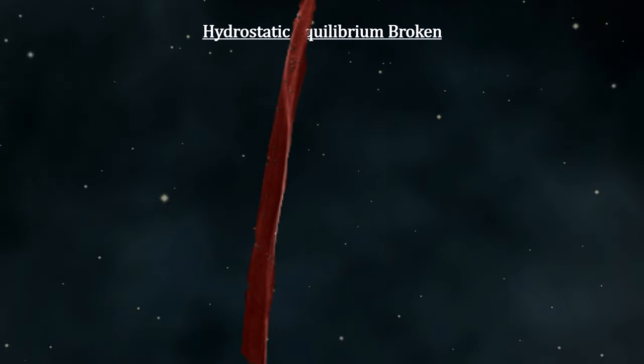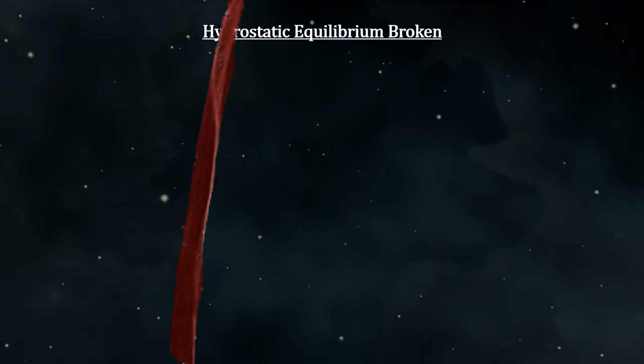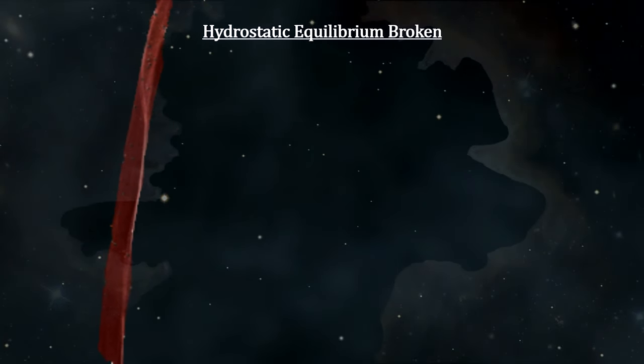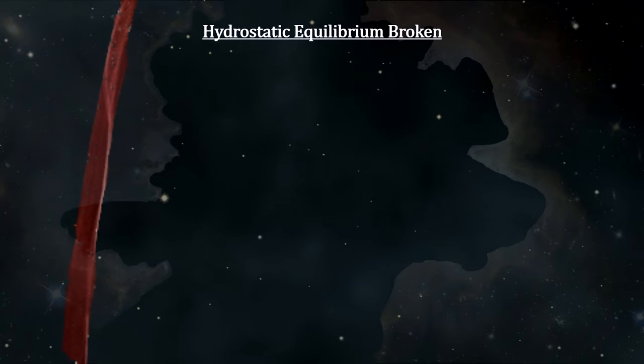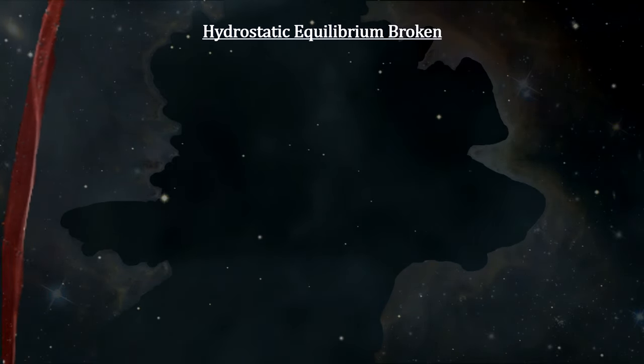Another theory suggests that collapse is triggered when a cloud passes into a galaxy's spiral arm. In any case, once started, the collapse becomes extremely chaotic, and the chaos will continue until a new hydrostatic equilibrium is established.